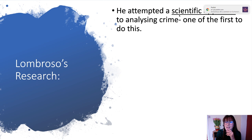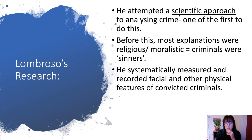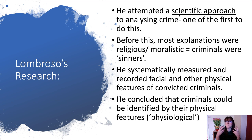Lombroso attempted a scientific approach to analysing crime — one of the first to do so. Before him, most explanations were religious or moralistic: criminals were simply sinners. Lombroso systematically measured and recorded facial and other physical features of convicted criminals, concluding that criminals could be identified by their physiological features — something physically about them that you can spot.